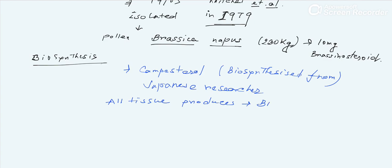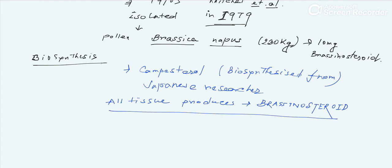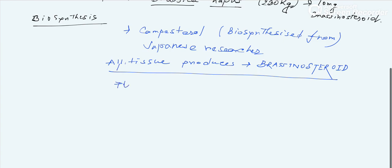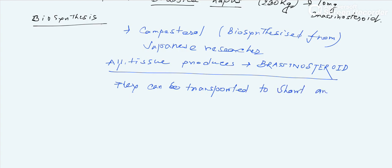All tissues of the plant can produce brassinosteroid. All tissue can synthesize brassinosteroid. An important feature is that brassinosteroid can be transported over short as well as long distances within the plant.